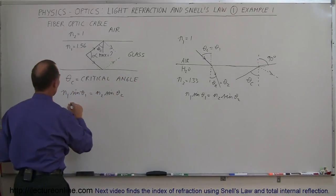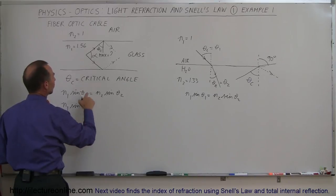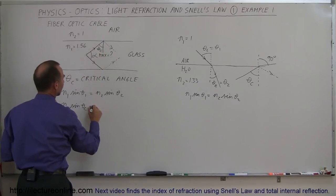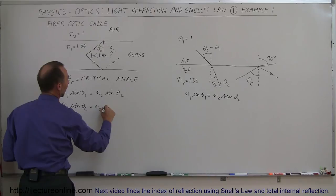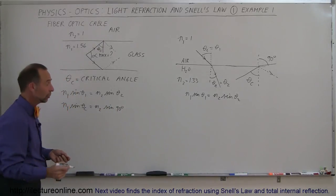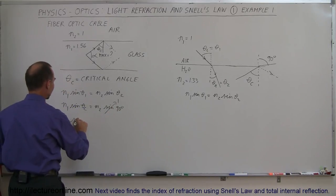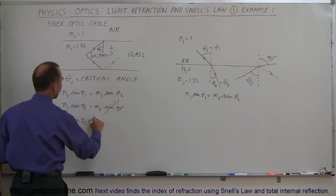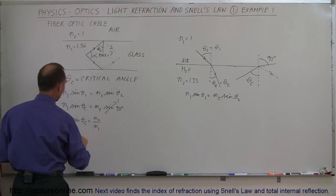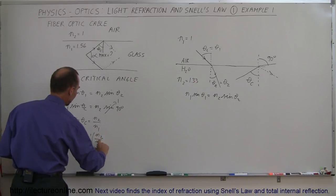That would be theta sub 2. So we have n1 sine of the critical angle, which is the angle right here, is equal to n2 times the sine of 90 degrees. And of course, the sine of 90 degrees is equal to 1. Which means that we can now write the sine of the critical angle is equal to n2 divided by n1. Or the critical angle can be found by taking the arc sine of this ratio of n2 divided by n1.